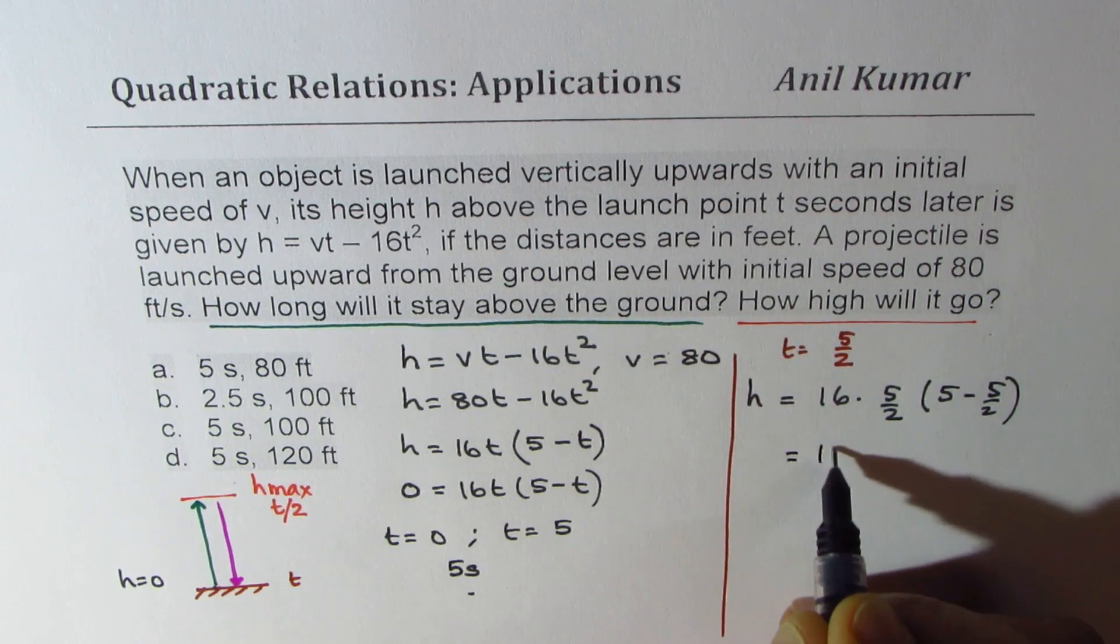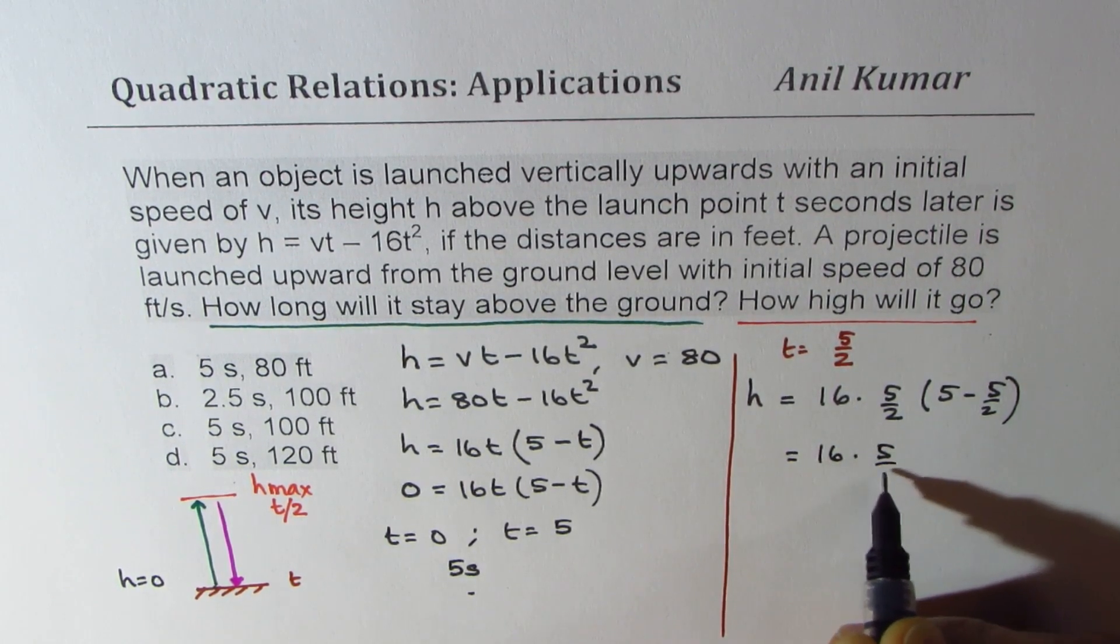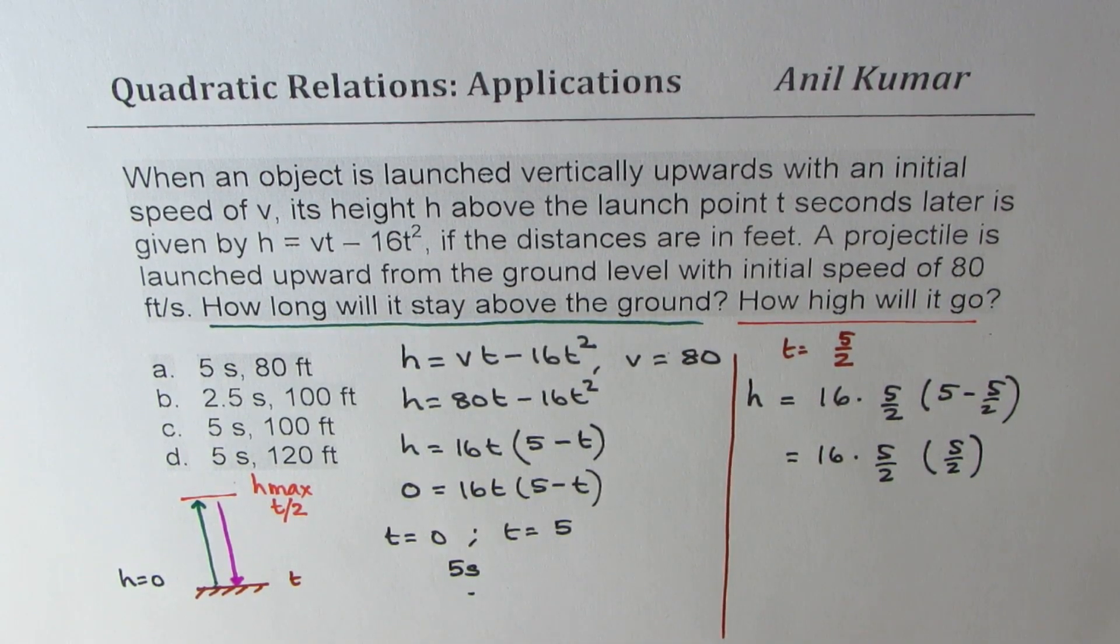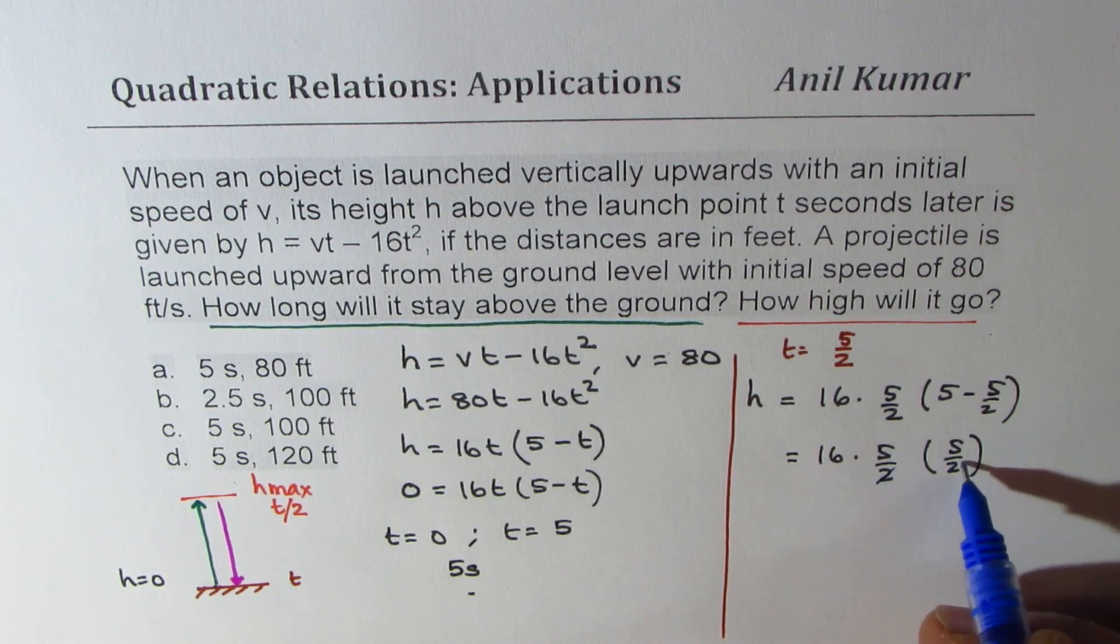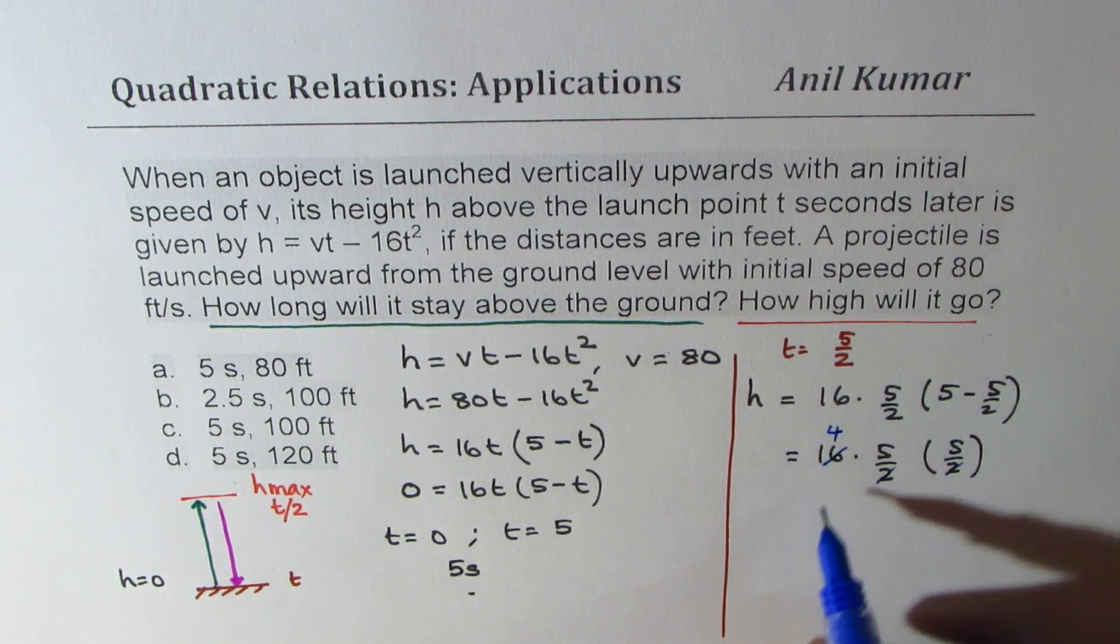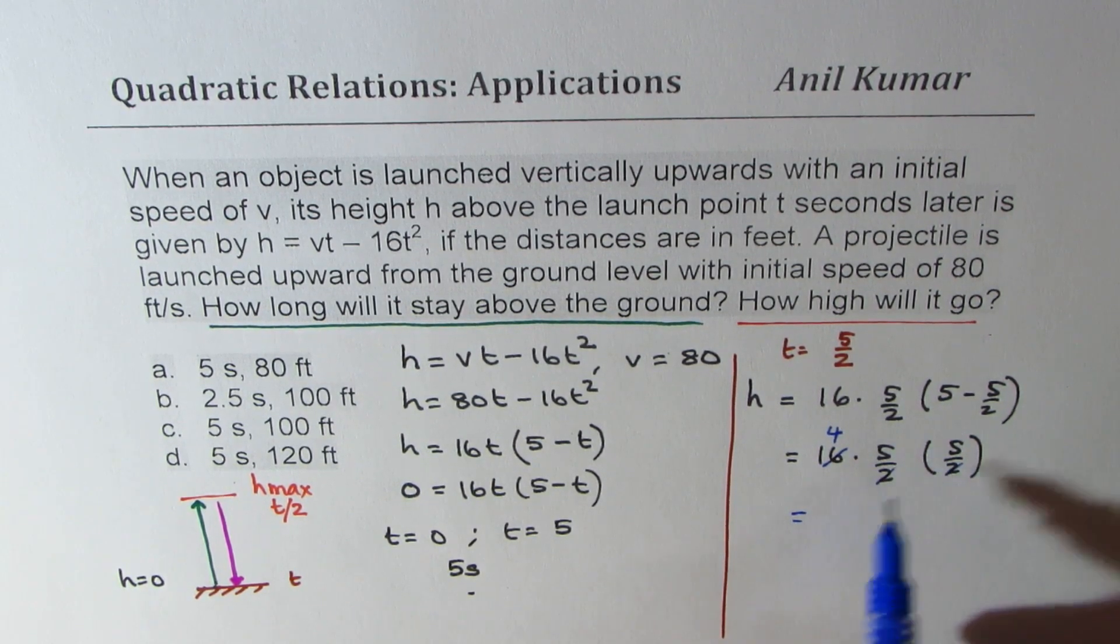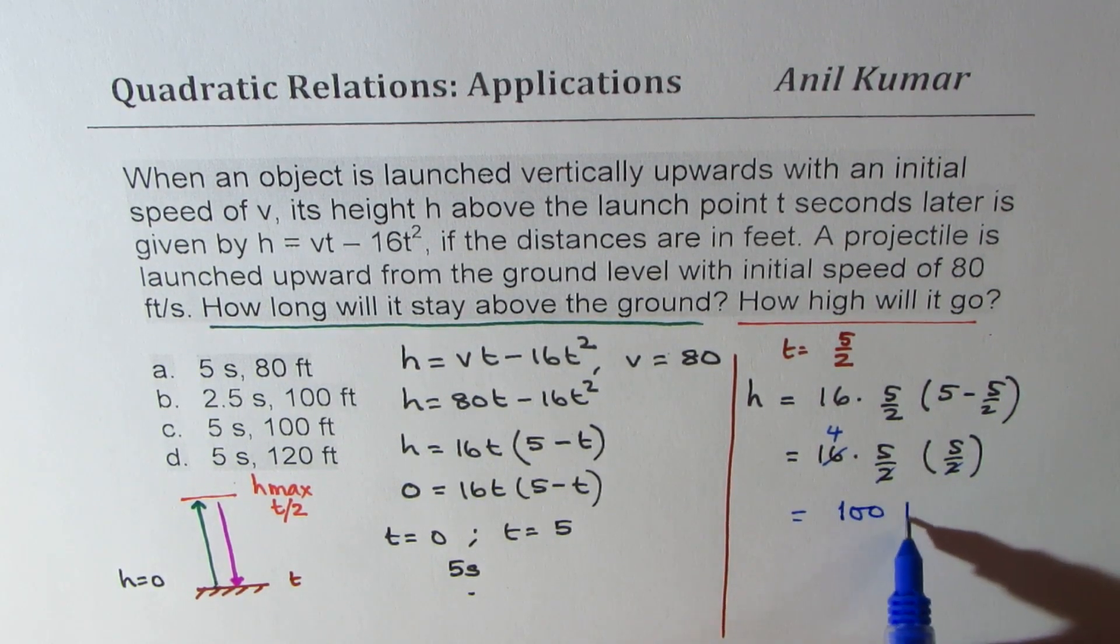So that gives you 16 × 5/2 × 5/2. This could be easily simplified. You could cancel 2 times 2 times 2 as 4 and 4 times 4 is 16. And when you multiply 4 times 5, 20 times 5, 100. So we get 100 feet.